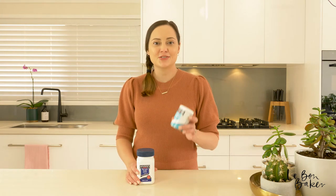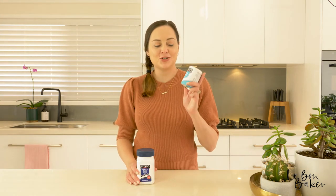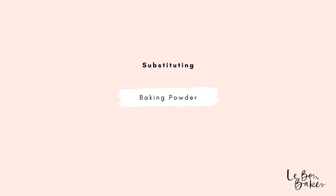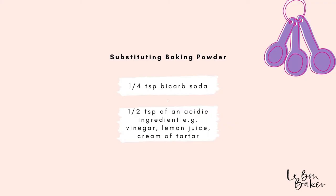Now let's do the reverse — substituting baking powder for soda. If your recipe calls for one teaspoon of baking powder and you don't have any, all you need to do is add one quarter of a teaspoon of bicarb soda and half a teaspoon of an acidic ingredient such as lemon juice or vinegar.